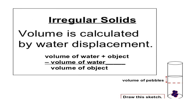For irregular solids like pebbles, marbles, or stones, volume is calculated by water displacement. In measuring the volume of irregular solids, we use the water displacement method, where the volume of water plus the object, minus the volume of water alone, equals the volume of the object.